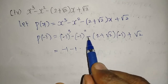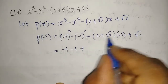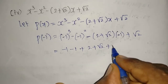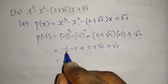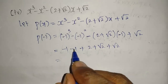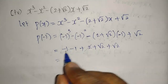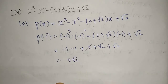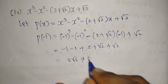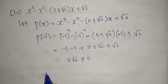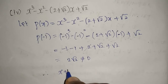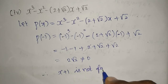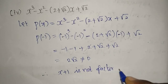The minus × minus gives plus, so we get +(2 + √2) and then + √2. So: -1 - 1 + 2 + √2 + √2 = -2 + 2 + 2√2 = 2√2. Since 2√2 ≠ 0, therefore (x+1) is NOT a factor of the given polynomial x³ - x² - (2+√2)x + √2.